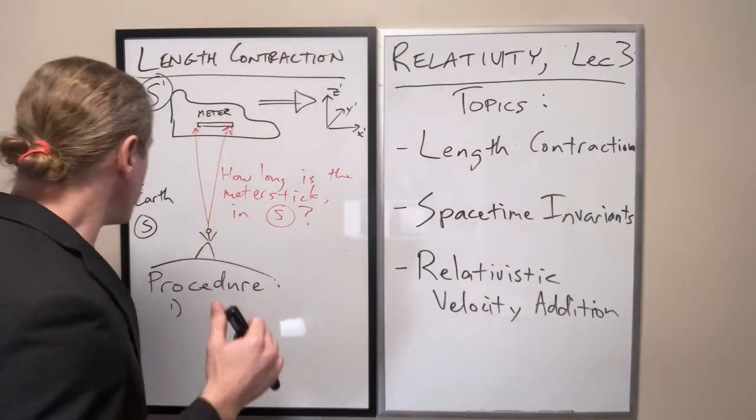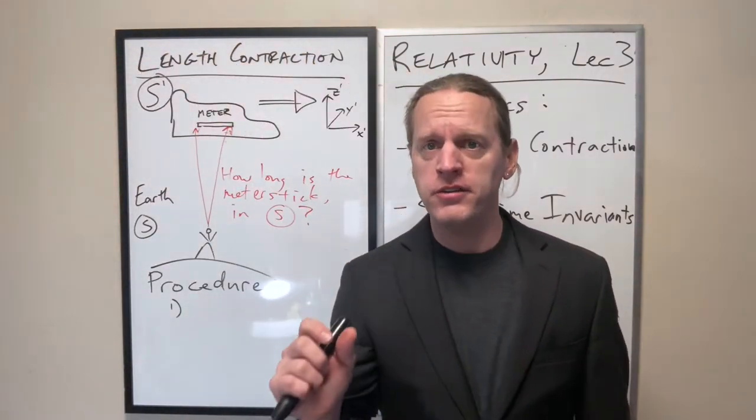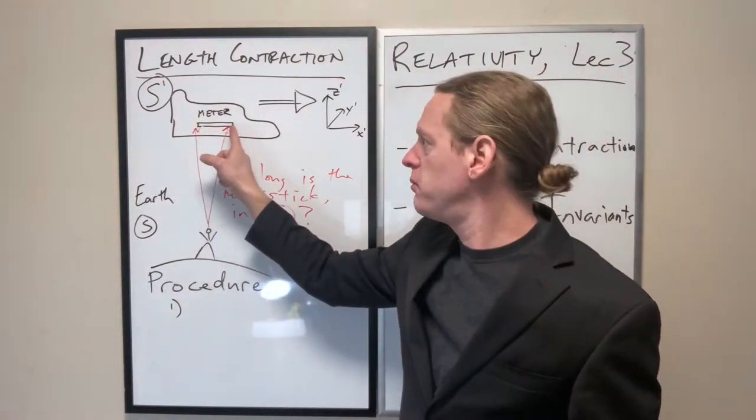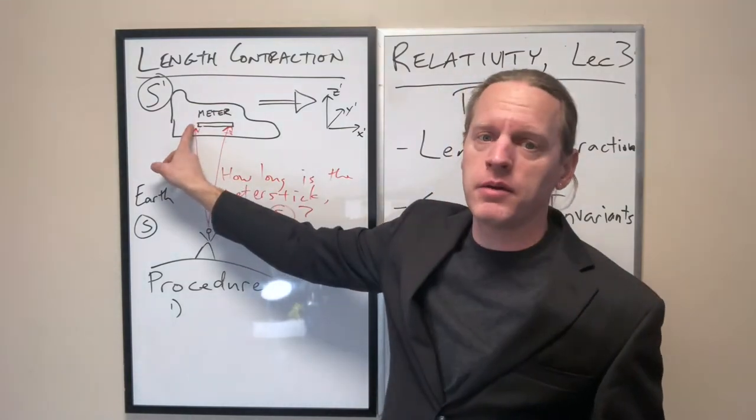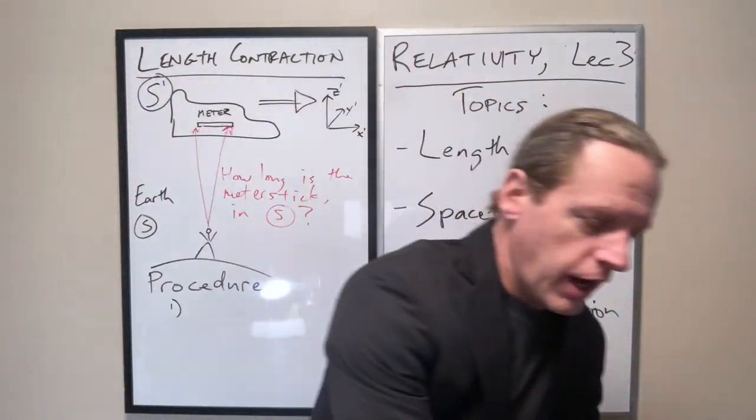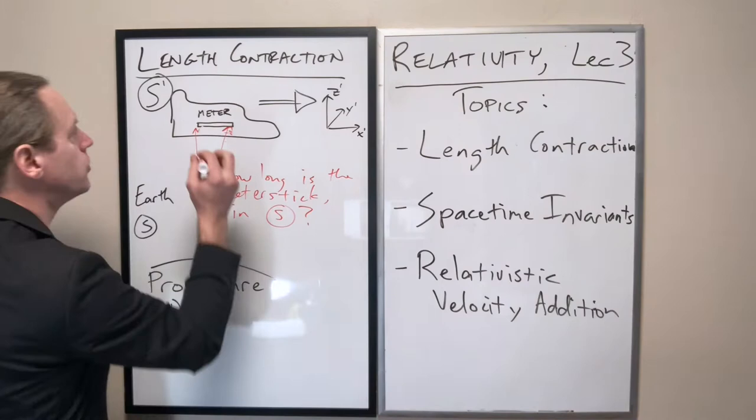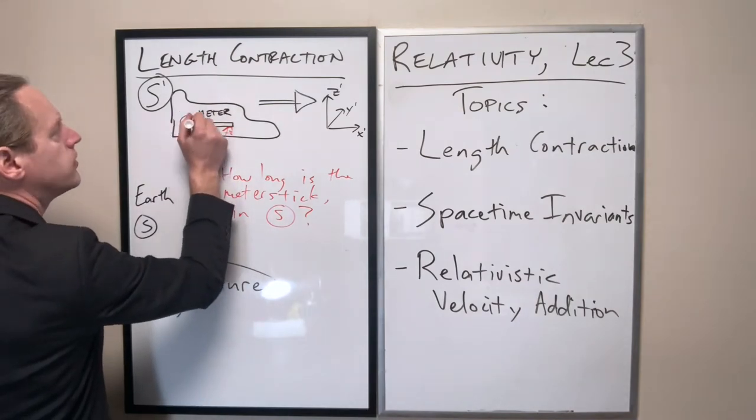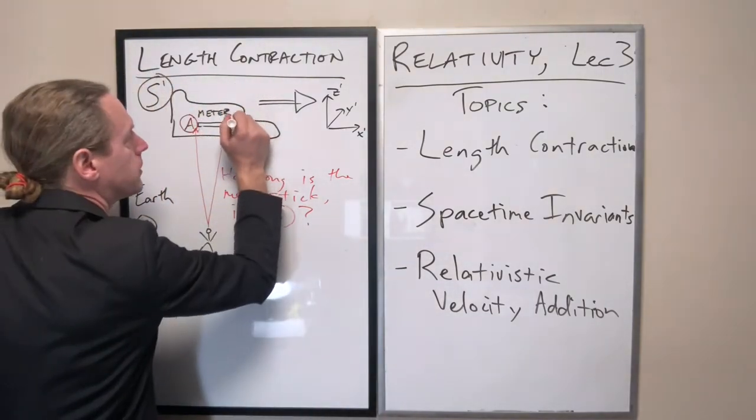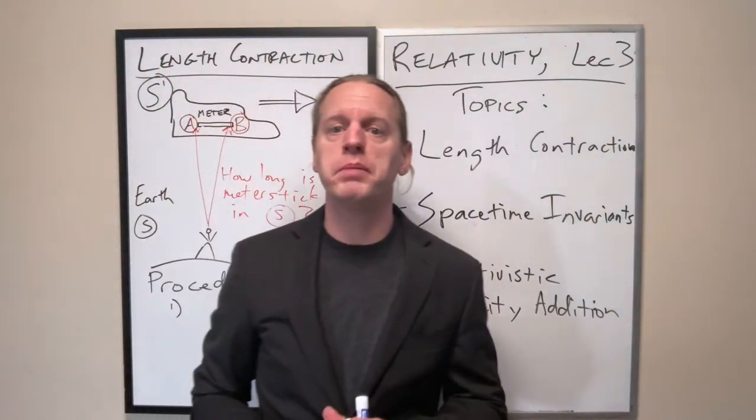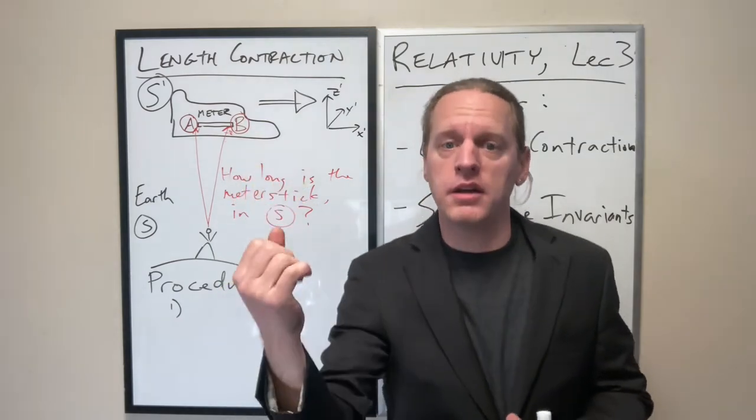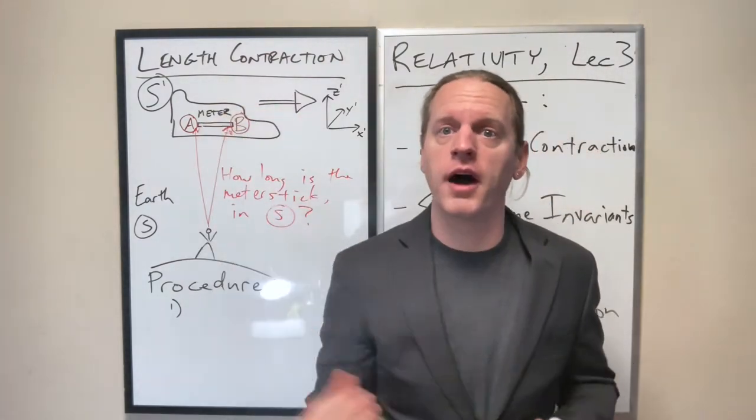So with that said, what we're going to do here is we are going to measure the space time coordinates of, I'm going to call this not position A and position B, I'm going to call it space time event A and event B. So in other words, I'm going to refer to the beginning of the meter stick as event A, meaning that it has an X, Y, Z, and a T. And I'm going to refer to the end of the meter stick as space time event B. It has some other XB, YB, ZB, TB, though those are variables with subscripts below, I should say.